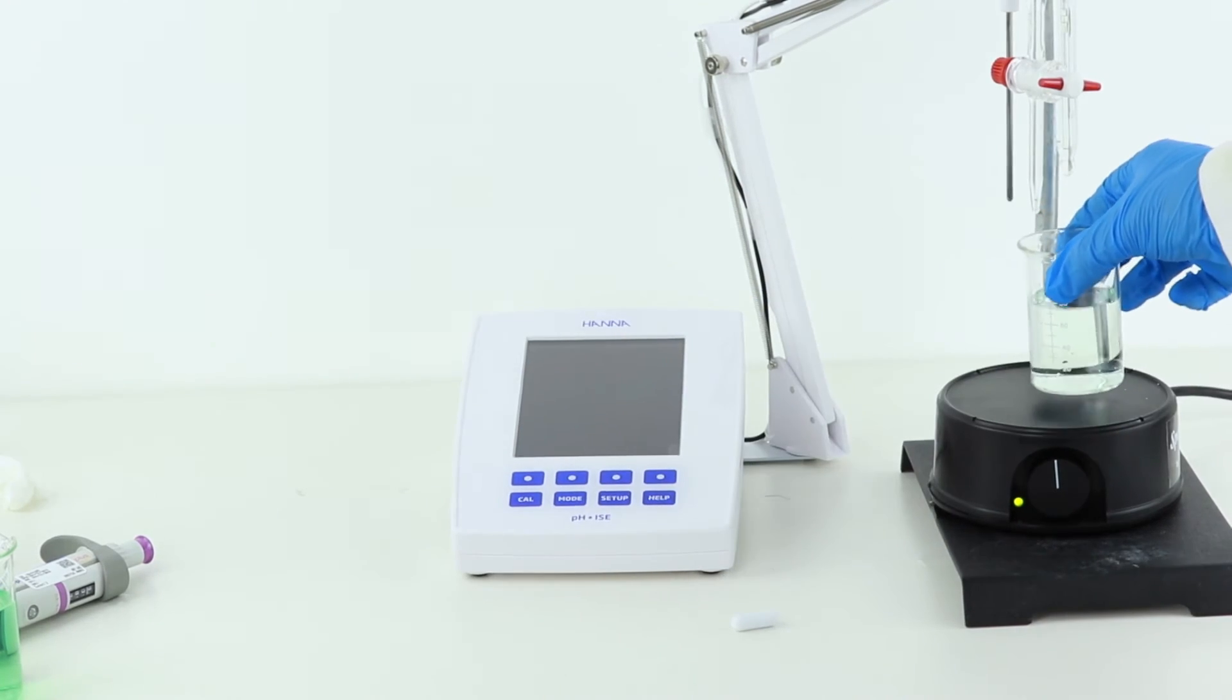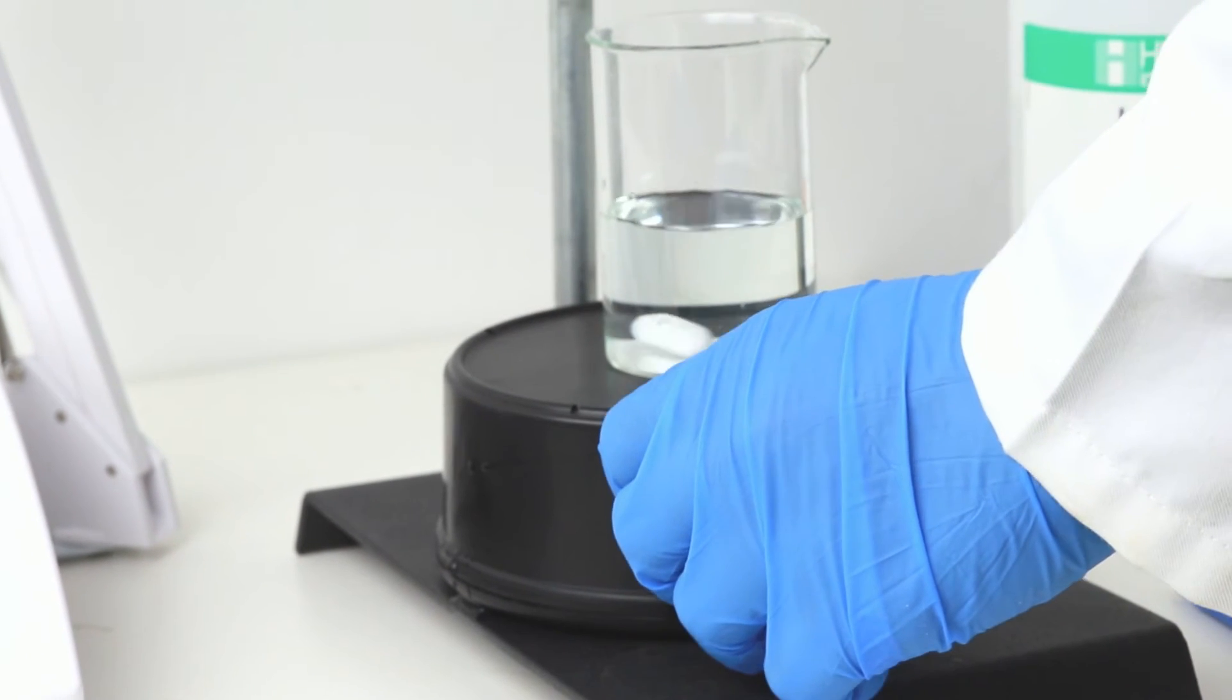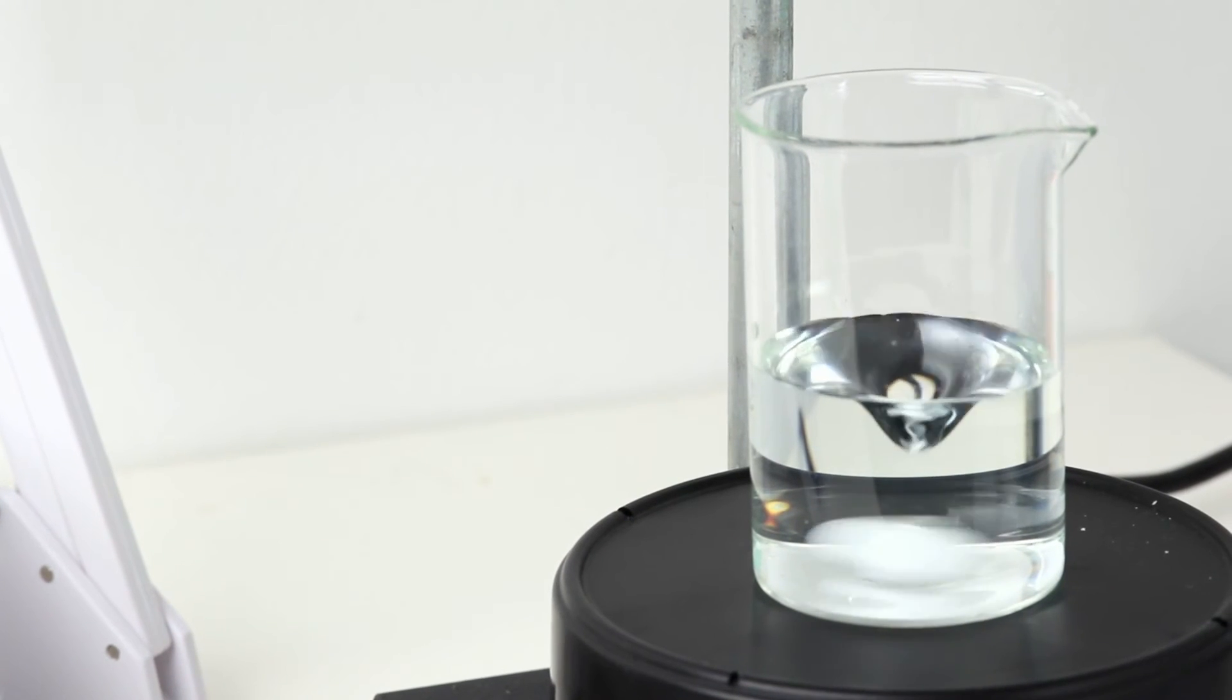We'll put the sample on a magnetic stirrer, add a stir bar, and begin stirring. It's important to constantly stir throughout the titration.